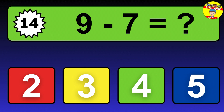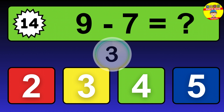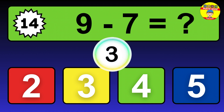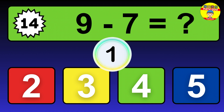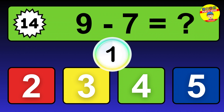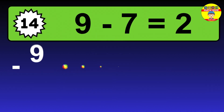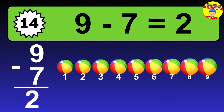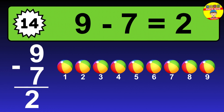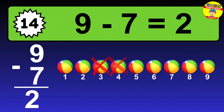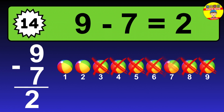Question 14. 9 minus 7 equals what? The answer is 9 minus 7 is 2. Let's count it: 1, 2.